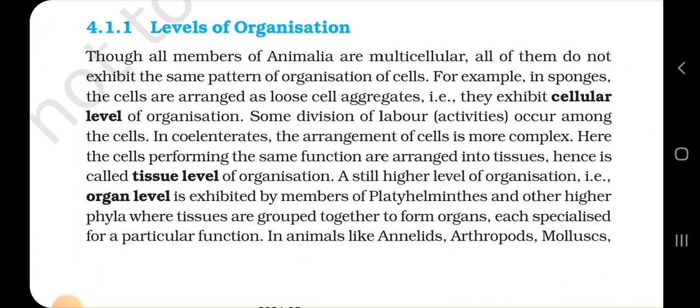4.1.1 Level of Organization. Though all members of Animalia are multicellular, all of them do not exhibit the same patterns of organization of cells. For example, in sponges, the cells are arranged as a loose cell aggregate, that is, they exhibit cellular level of organization. Some division of labor occurs among the cells.